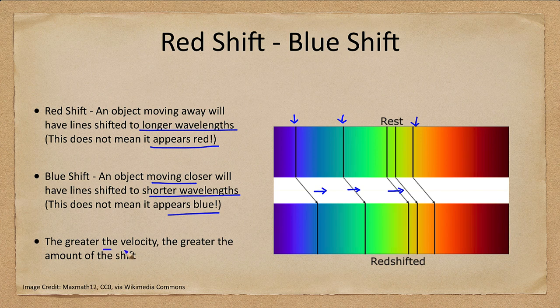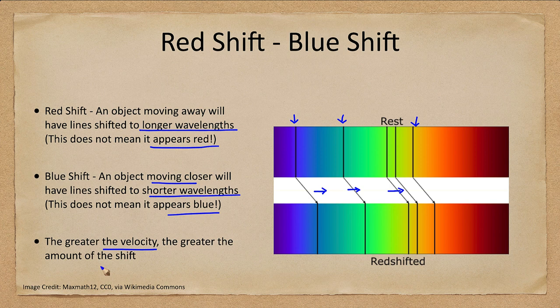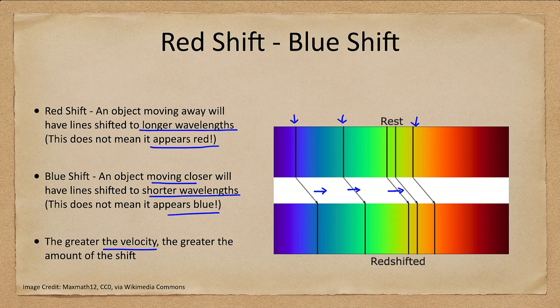The greater that velocity, the greater the amount of the shift. While you could technically shift blue light into the red portion of the spectrum, it takes incredibly high velocities, large fractions of the speed of light, to be able to get a shift of that size.